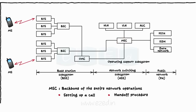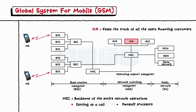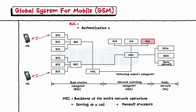Other blocks of NSS are: HLR, Home Location Register, which keeps the database of all the users who reside in the same geographical area. VLR, Visitor Location Register, keeps track of all the users who are visitors to that particular geographical area — mainly roaming customers. AUC, Authentication Center, mainly controls the authentication of the users by checking their SIM numbers, etc.